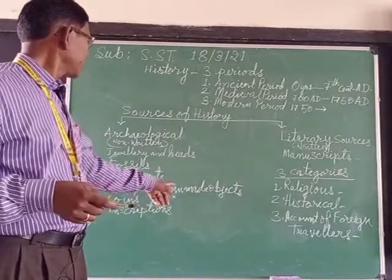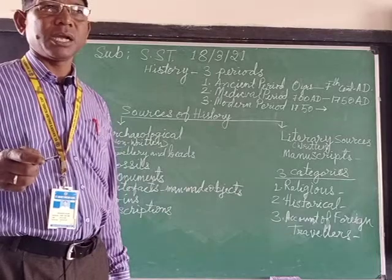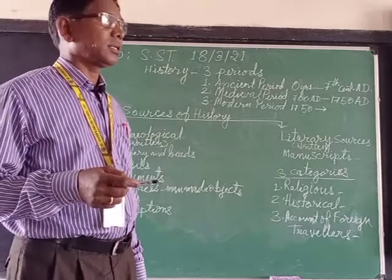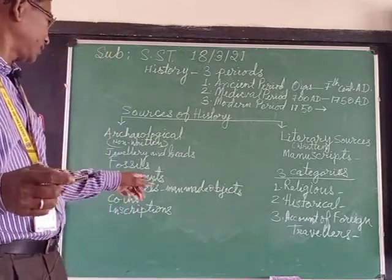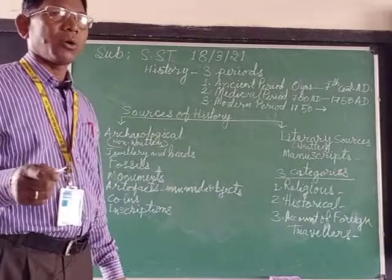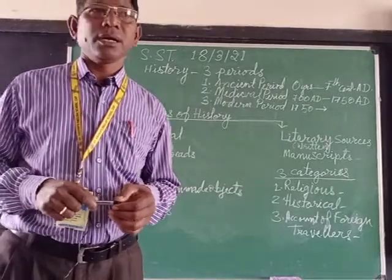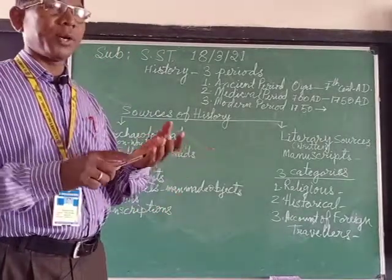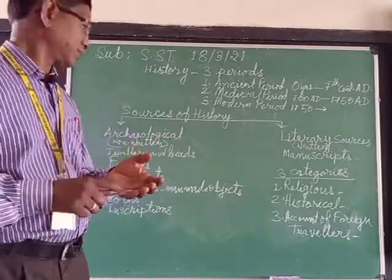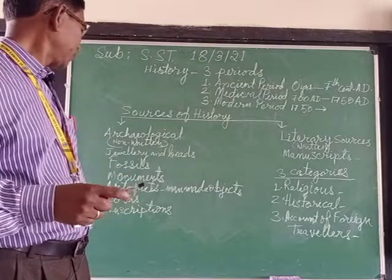Artifacts are man-made objects, like vessels, stone tools, and other things. After that, coins — coins were made of metals such as copper, silver, and gold, and they are found by digging.